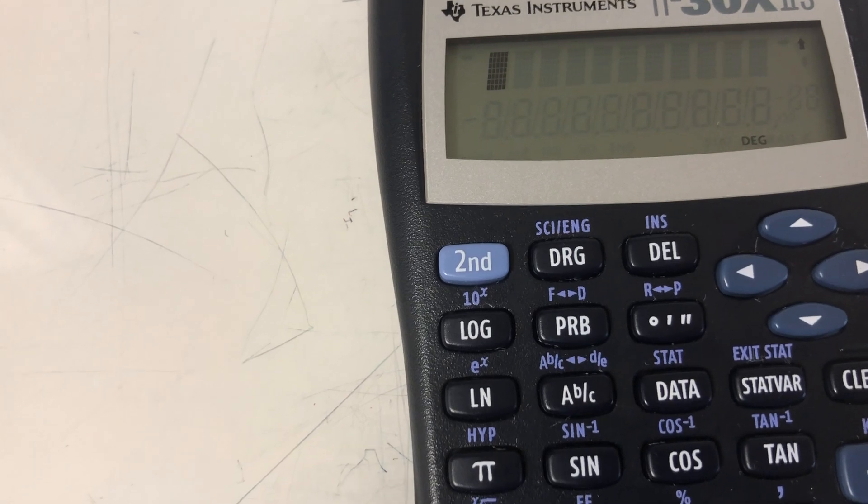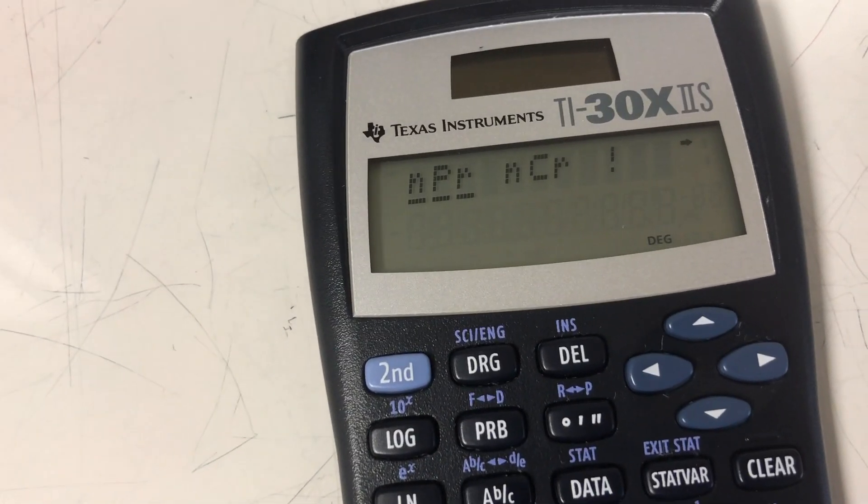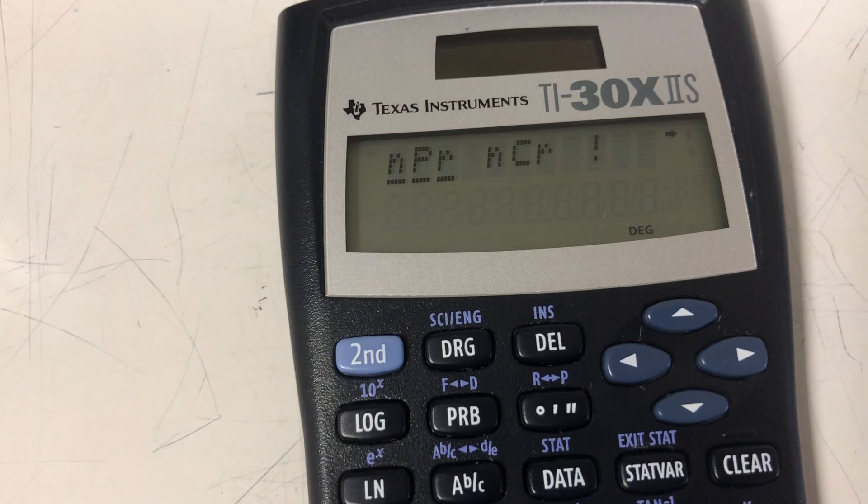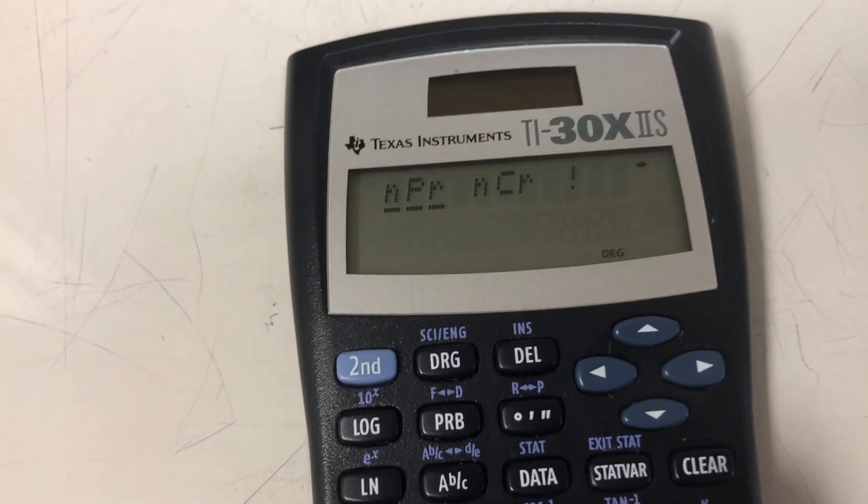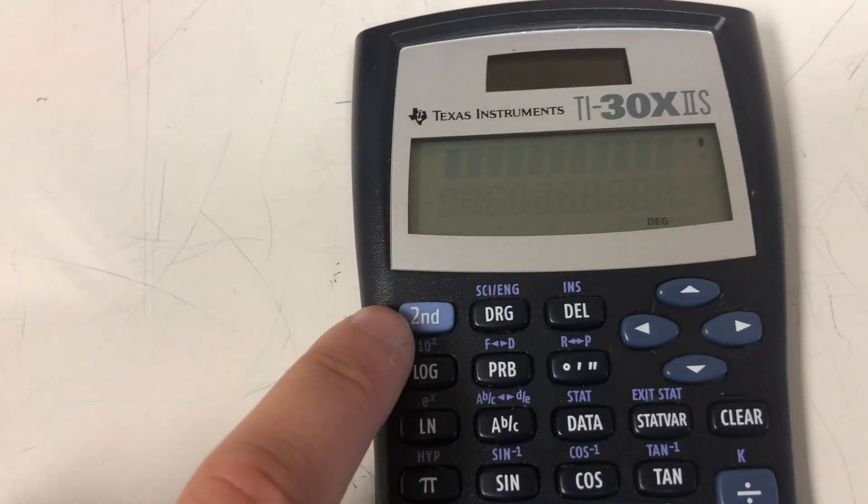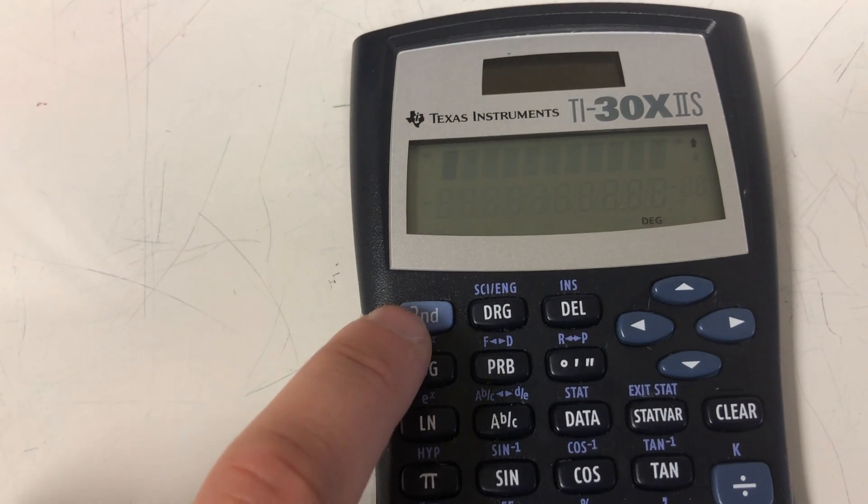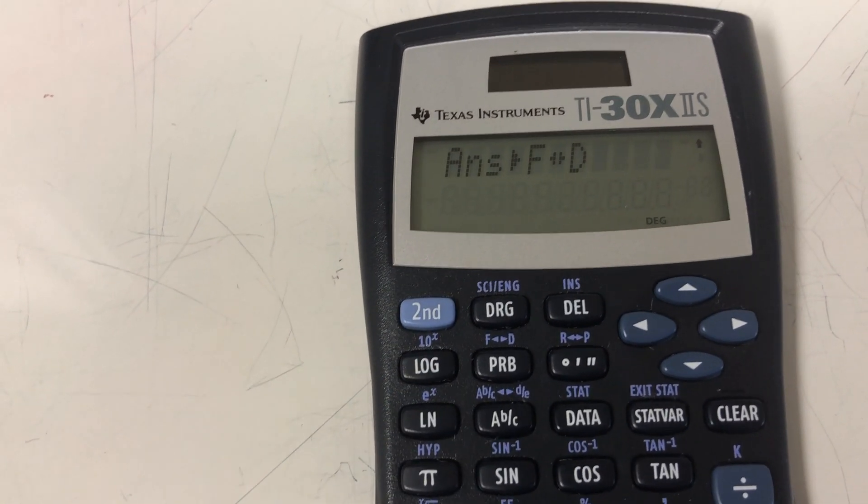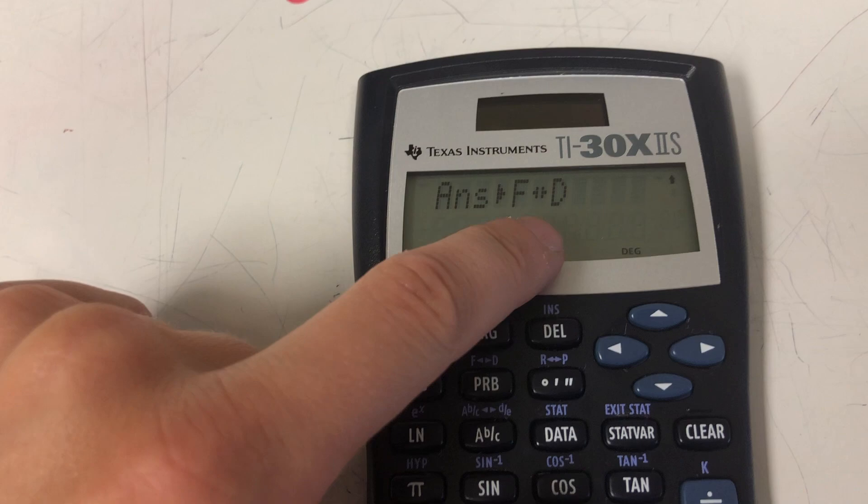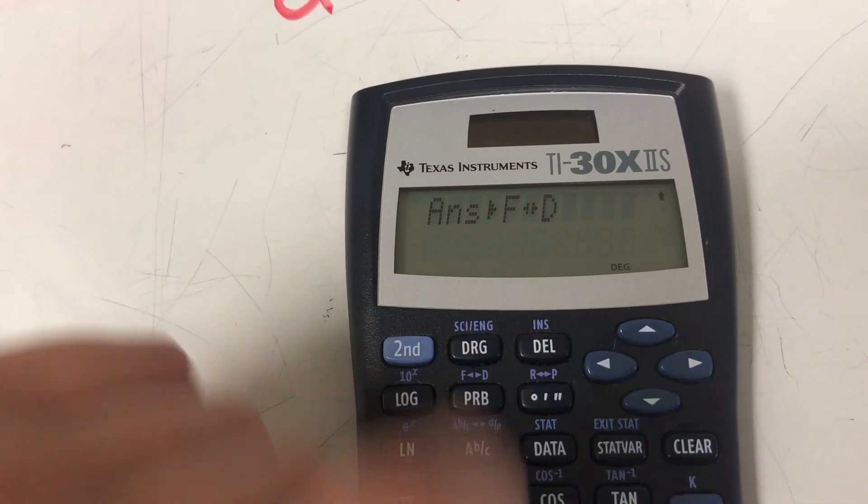But to access that key, if I just push on the PRB right now, I end up with some probability calculations, and that's not what I want. So since it's in purple on this calculator, this second button is also purple, so I will use second, and then I will press PRB, and it's going to take whatever I have typed in and convert it from a fraction to a decimal or a decimal to a fraction.